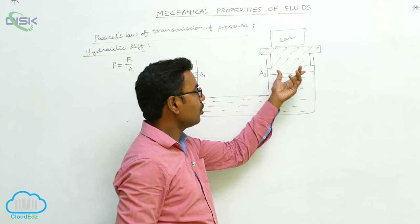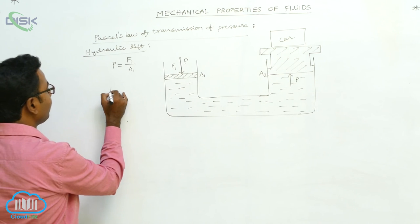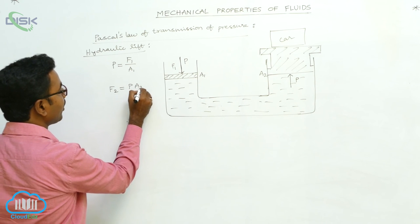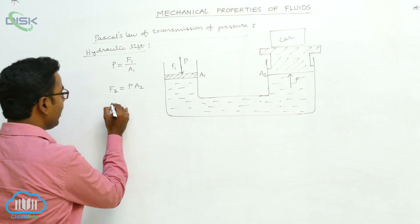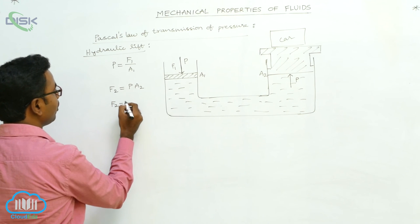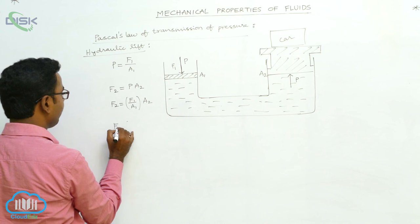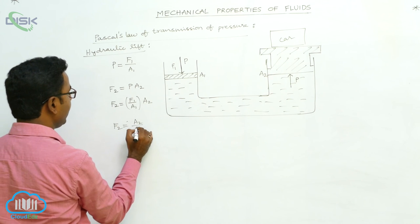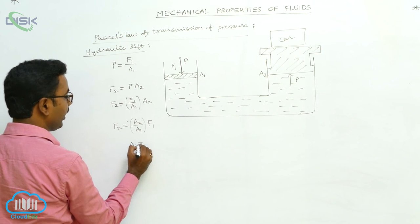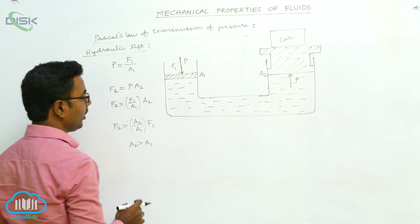The force acting on the piston of area A2 is F2, where F2 = P × A2. Substituting P = F1 / A1, we get F2 = (F1 / A1) × A2, which can also be written as F2 = (A2 / A1) × F1.